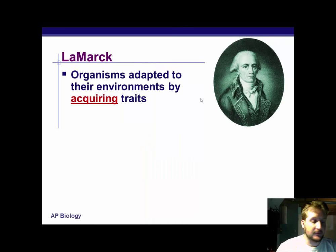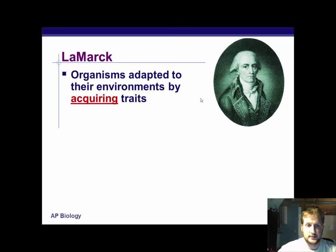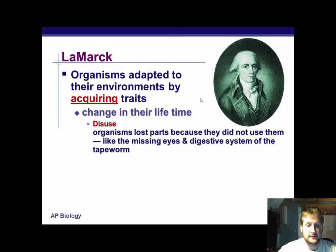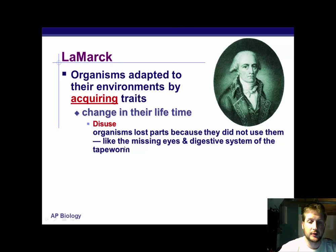We're going to bring up a few different scientists. This first lecture is a lot about some history of evolution. The first guy we're going to bring up is Lamarck. Lamarck believed in organisms adapted to their environment by acquiring traits — the key word there is acquiring. He believed that they could change during their own lifetime. Disuse: organisms lose parts because they do not use them, like the missing eyes and digestive system of the tapeworm — worms found underground don't have eyes at all because there's no reason to use them, and they don't have much of a digestive system. So he thought that by not using them, organisms lost those traits.